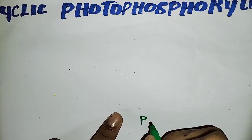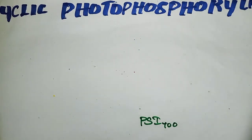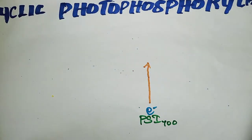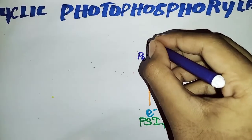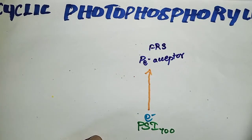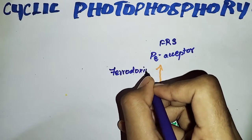Now it is cyclic photophosphorylation. In cyclic photophosphorylation, where it happens — it happens in the stroma lamellae. Because in the stroma lamellae, there is no presence of PS2 — only PS1 is present. So this PS1, P700, when excited, the electron moves and reaches the primary electron acceptor — that is FRS, ferredoxin reducing substrate — and then reaches ferredoxin.